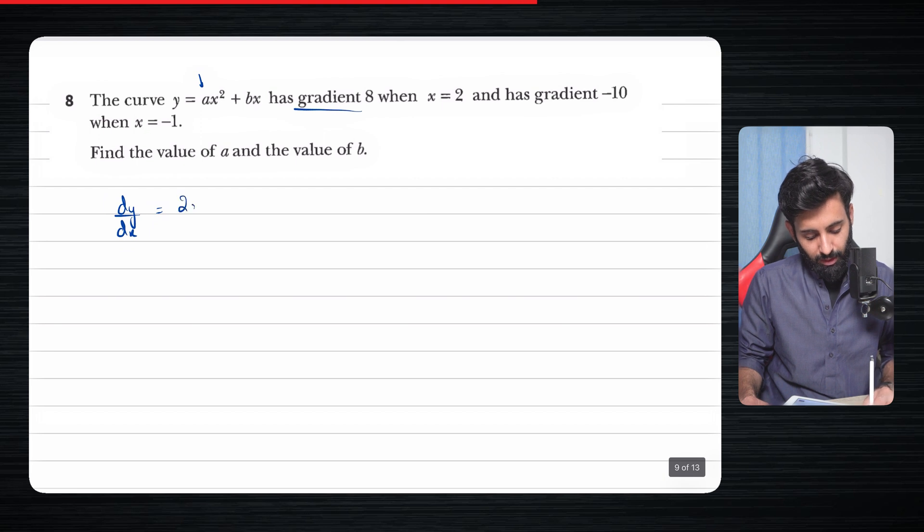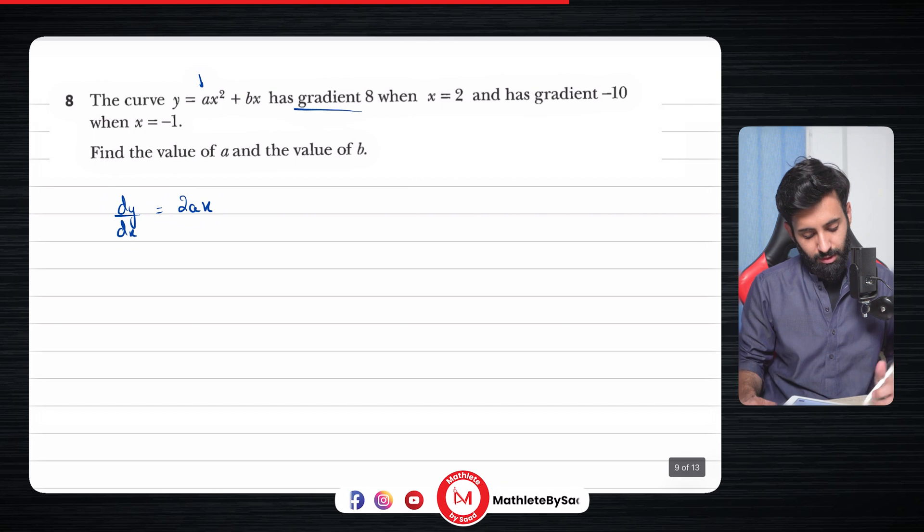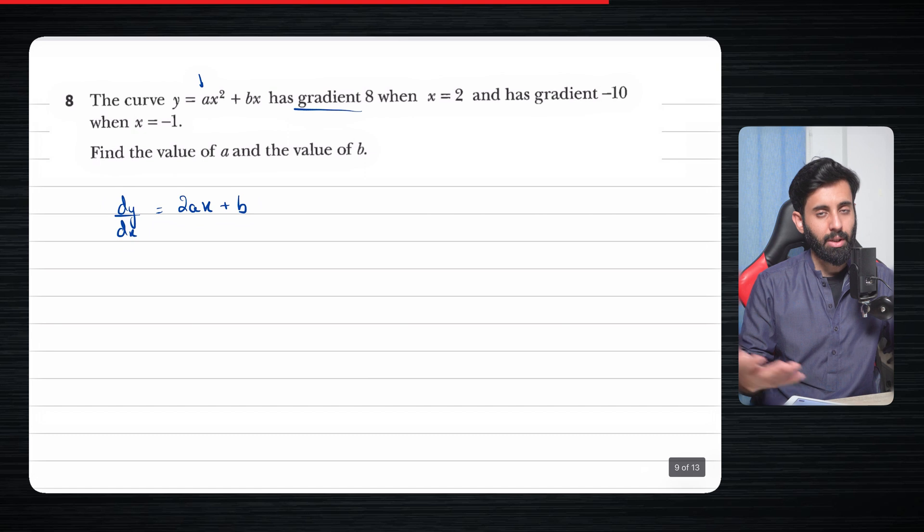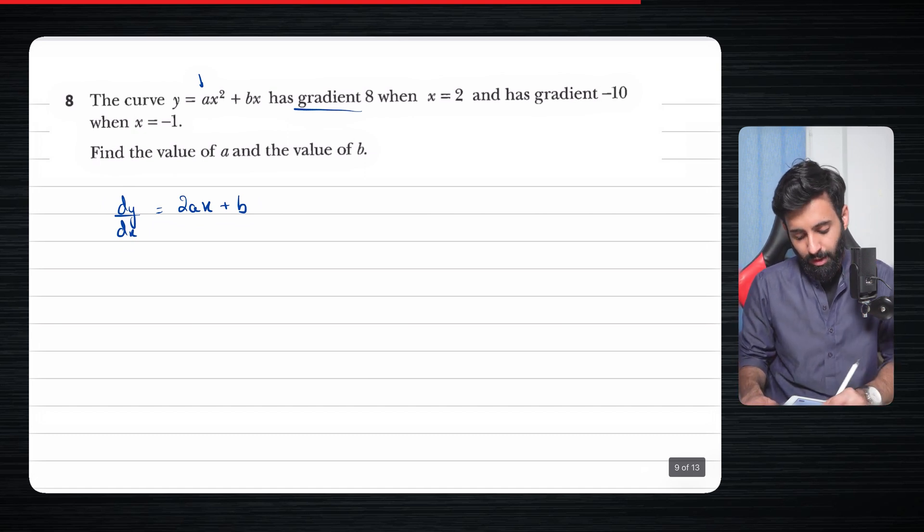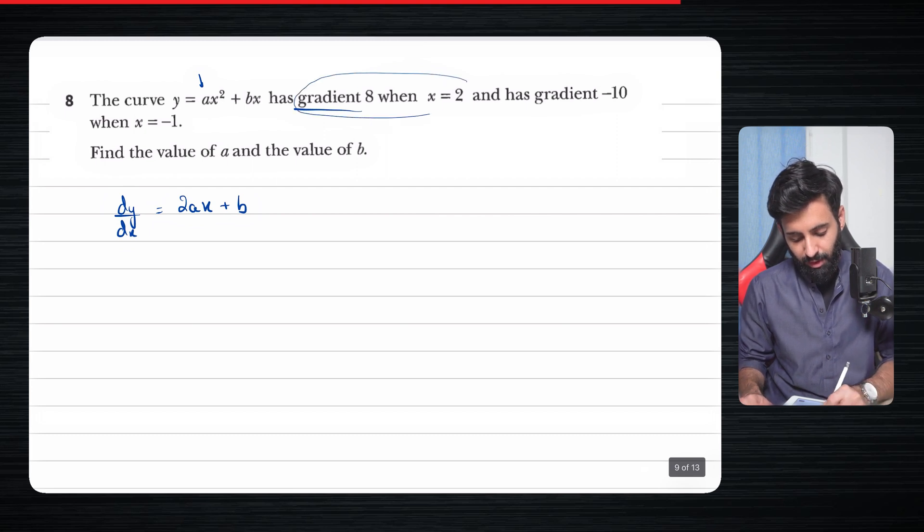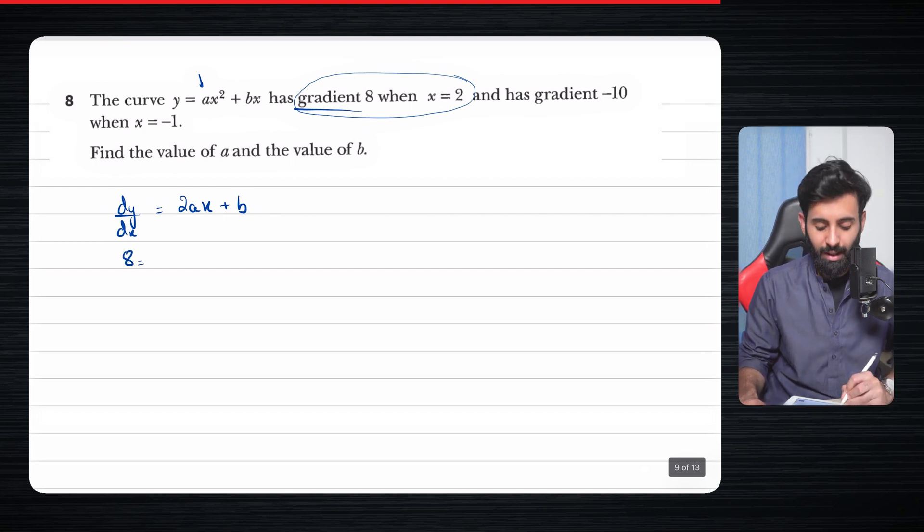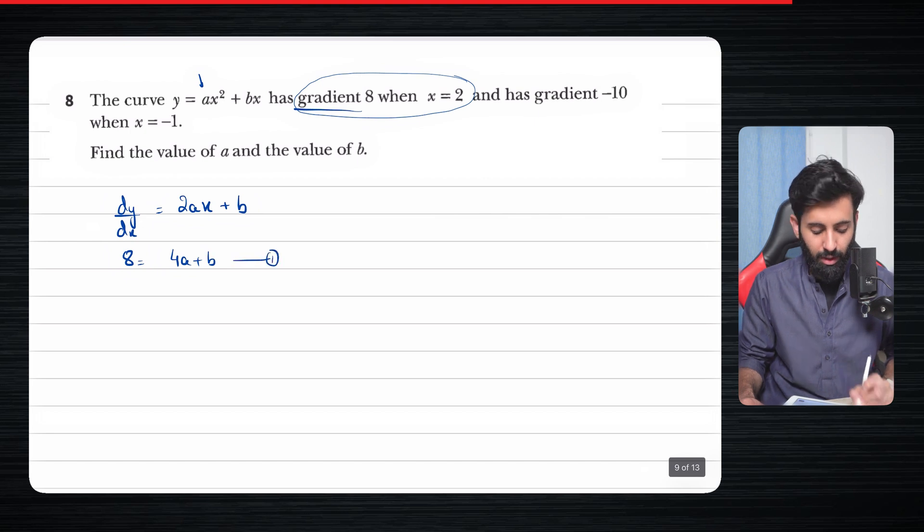So 2 gets multiplied by a, so that becomes 2a, and we reduce the power of x by one. So now we have just x plus b. It's like differentiating 3x, which is 3, or 2x, which is 2. So bx will just be b. Now this set of values will help us form one equation when gradient is 8 when x equals 2. So that means we're going to replace dy/dx by 8 and we're going to plug in x as 2. So 2 into 2, that's 4a plus b.